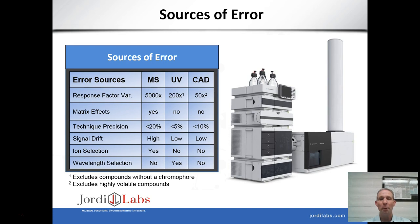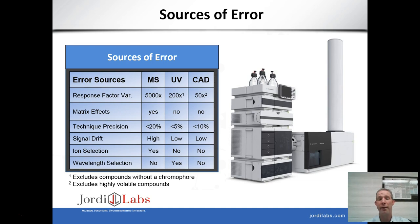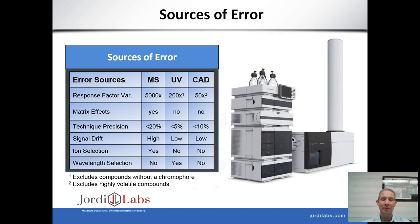In summary, considering sources of response factor error: for MS, very large response factor variation has been observed — up to 5,000 times in our laboratories. For UV it's generally less, though it can be significant — up to 200 times has been observed. For CAD, up to 50 times. Choosing good standards to minimize response factor variation is therefore critical to avoid significant quantitative errors. Sample matrix effects are a significant problem in mass spectrometry quantitation, making UV and CAD superior detectors for relative quantitation in that regard. Precision is also best for UV, secondary for CAD, and worst for MS.